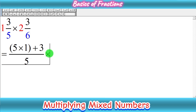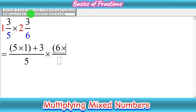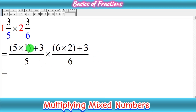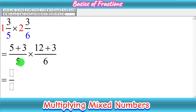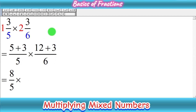We write the multiplication sign and convert the second mixed number into an improper fraction using the same method. Multiply the denominator with the whole number: 6 times 2, then add the numerator 3, keeping the denominator as 6. So 5 times 1 is 5, and 6 times 2 is 12. Adding the numerators: 5 plus 3 equals 8 over 5, and 12 plus 3 gives us 15 upon 6.